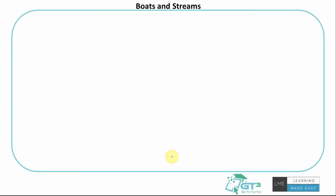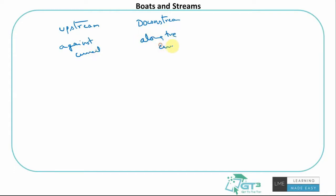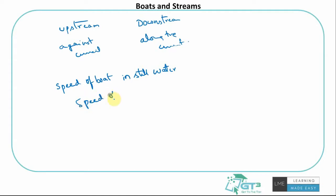Boats and streams is a slight extension to the very basic time, speed and distance. The key information you'll find in these questions involves terms like upstream, downstream, or the boat going against or along the current. You need to know two things: the speed of the boat in still water, and the speed of the water — the river, stream, or current.